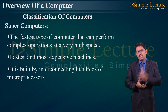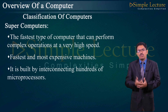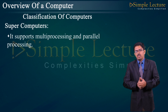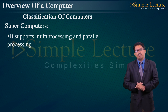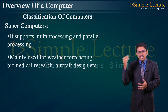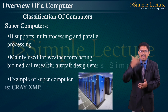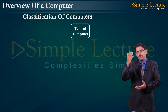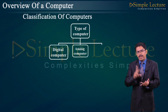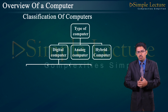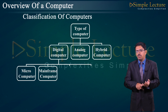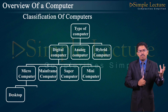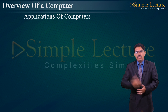Supercomputers are built by interconnecting hundreds of microprocessors and can be used in weather forecasting and military applications. They support multiprocessing and parallel processing and are mainly used for weather forecasting, biomedical research, and aircraft design. Example: Cray XMP. The overview classification shows computers divided into digital, analog, and hybrid types. Digital computers are further classified into microcomputer, mainframe, supercomputer, and minicomputer. Microcomputers are further classified into desktop/PC applications.